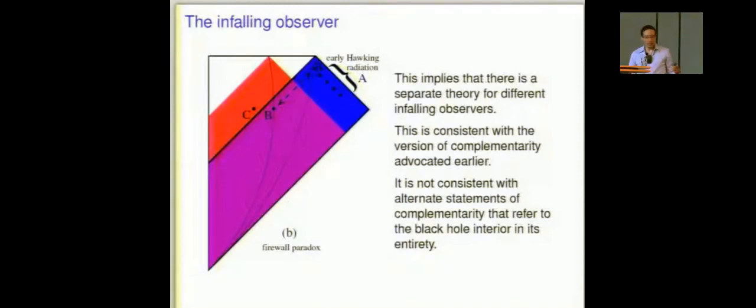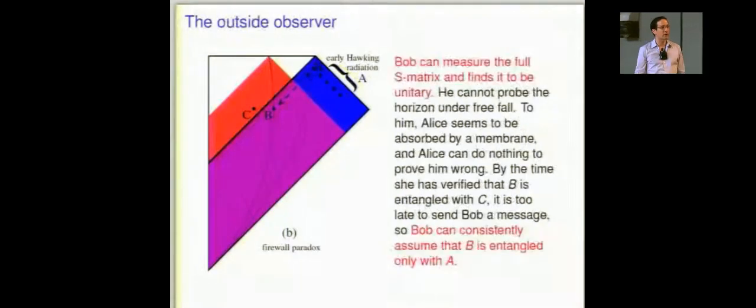Notice that this implies that there's a different theory for different infalling observers. This is quite consistent with what I told you earlier, since different infalling observers who fall in after 85 or 90 or 95% of the Hawking radiation also have different causal diamonds. There are alternative statements about what complementarity means that I think are somewhat misleading, like there's a map between degrees of freedom on the inside, that there's some sort of scrambled version of the Hawking radiation. I think that's misleading. It doesn't even make sense to speak about all of the degrees of freedom inside the black hole at the same time according to the restriction to a causal diamond. Nobody can see them all.